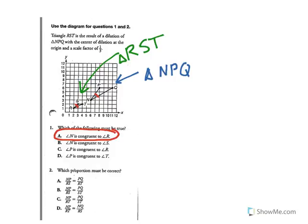For number 2, it wants to know which proportion must be correct. You have to look at the side lengths for each triangle to figure out which proportion is correct. Option A has NP over RS equal to PQ over RT. RT and PQ aren't corresponding — they're not in the same position — so that's not going to be correct.